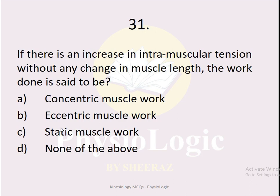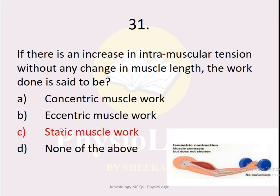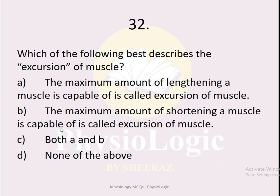MCQ number 31: If there is an increase in intramuscular tension without any change in muscle length, the work done is said to be — option A concentric muscle work, option B eccentric muscle work, option C static muscle work, option D none of the above. The correct option is static muscle work. Muscle work has three types: concentric (shortening), eccentric (lengthening), and static or isometric (increased intramuscular tension, no movement, no change in muscle length).